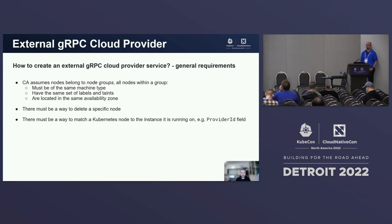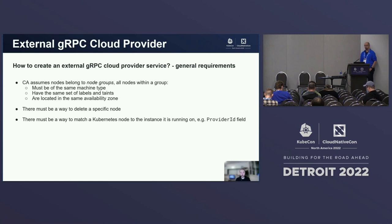This does not mean that if a cloud provider does not provide node group APIs it cannot be integrated in the CA — your implementation can fake those groups, but it helps. When downscaling, the CA deletes specific nodes in the node group, so a cloud provider must provide a way to delete a single node and also resize the group at the same time. There must also be a way to correlate a Kubernetes node to the actual host of the cloud provider, and usually there is a node field called provider ID where cloud providers add information to make this correlation.